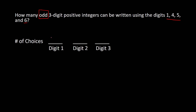For digit 1 (hundreds place), we have any of those four options. For digit 2 (tens place), same thing — any of those four numbers. For the ones place, however, we are limited to odd digits from the set {1, 4, 5, 6}. The odd numbers in that set are 1 and 5, so there are only two options for the ones place. Applying the fundamental counting principle, we multiply 4 times 4 times 2 to get 32.